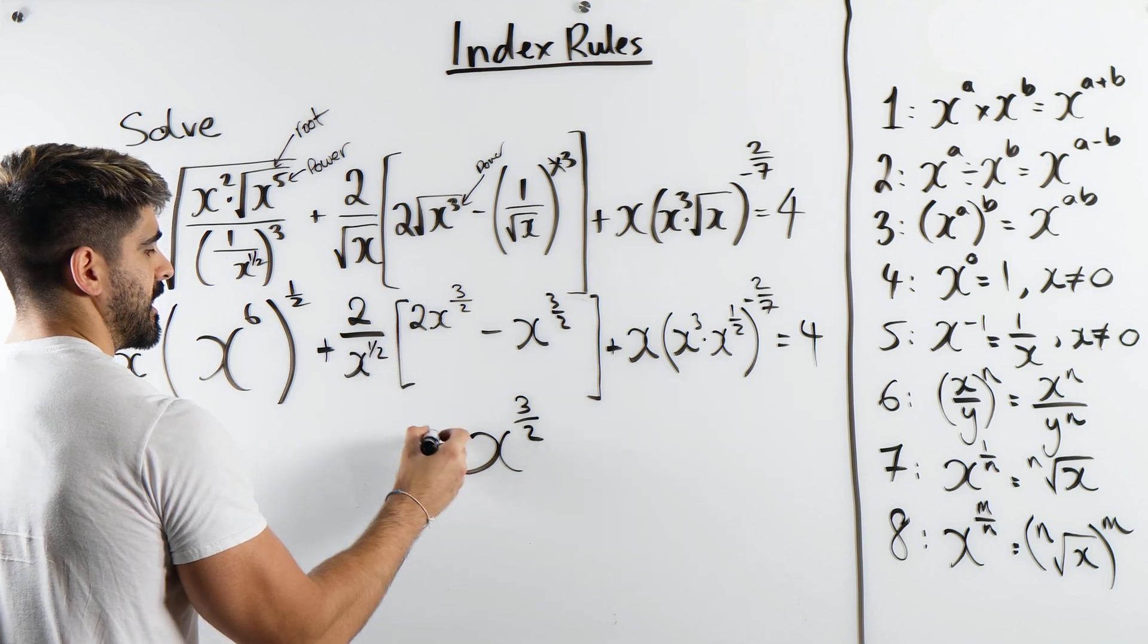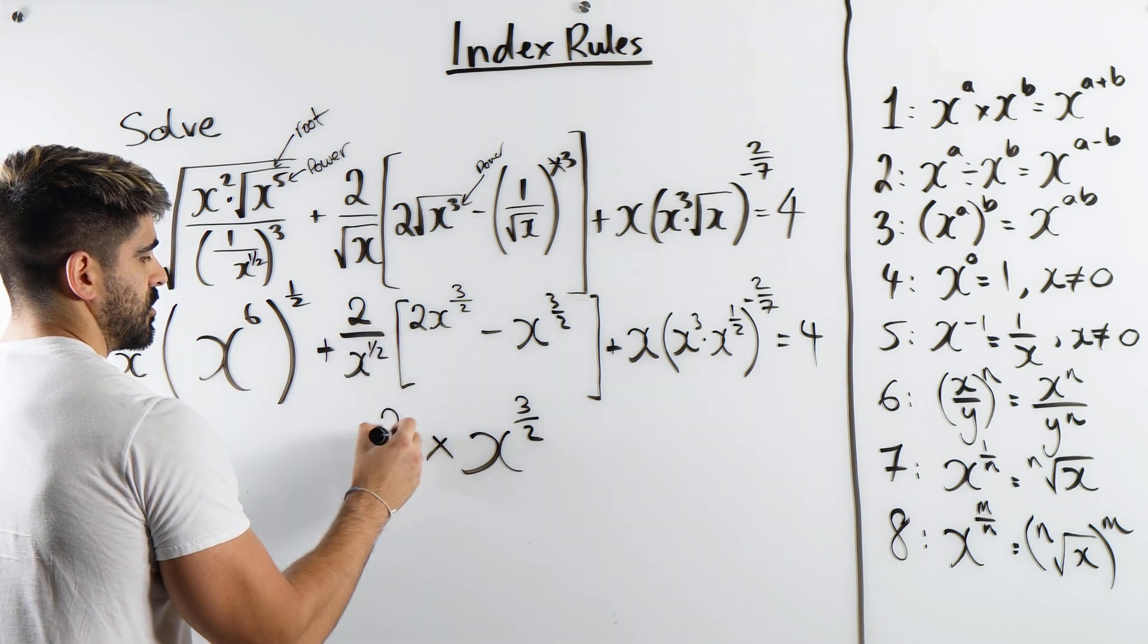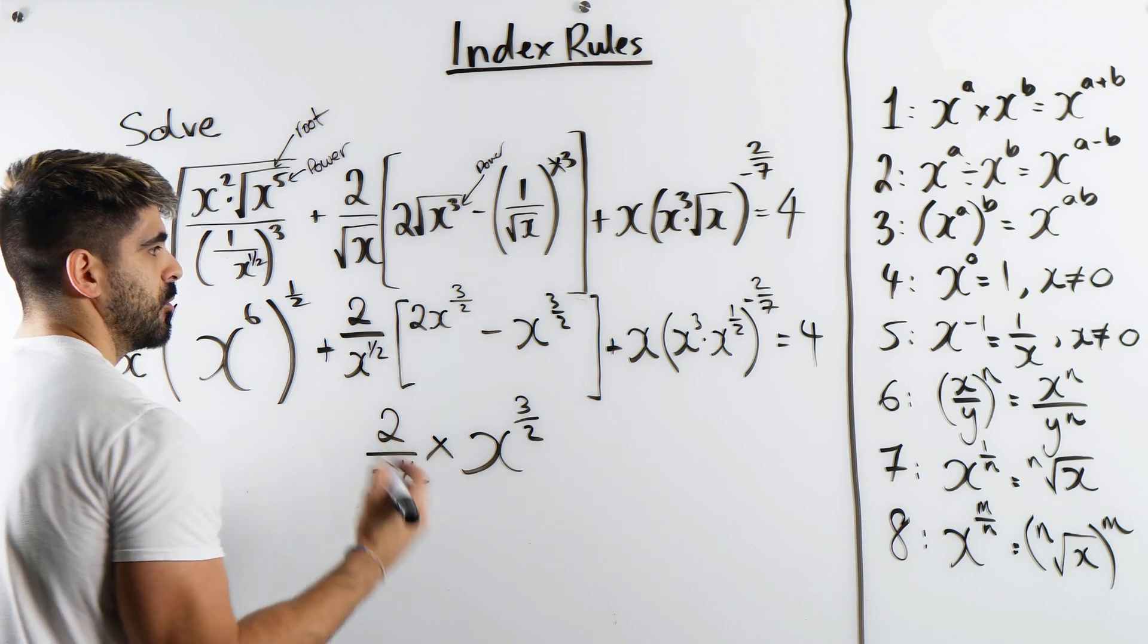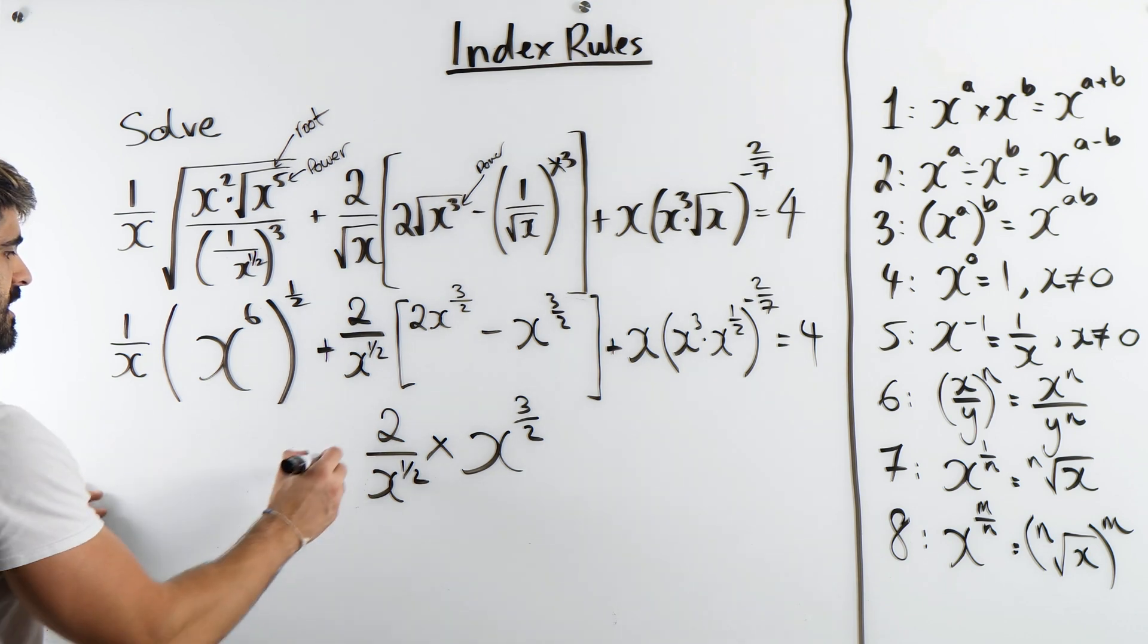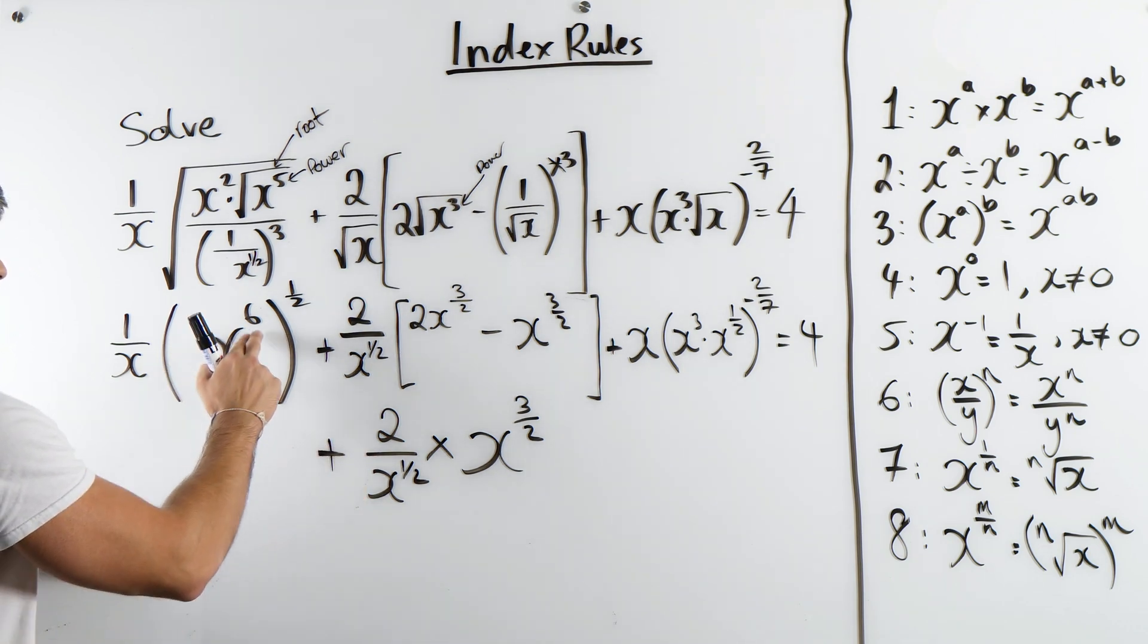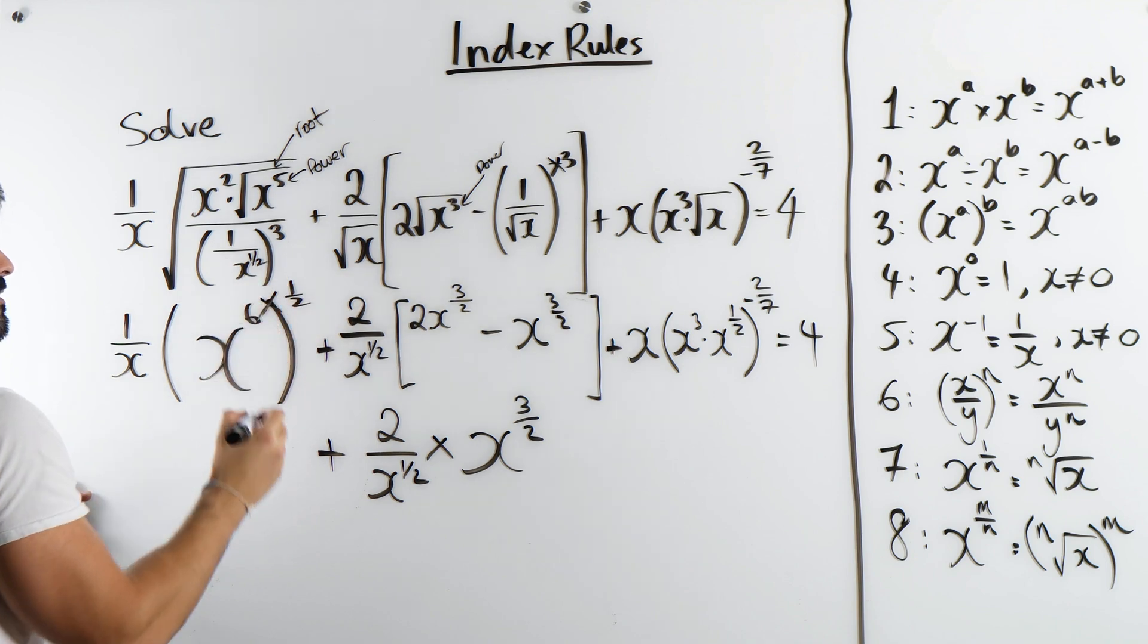And we are multiplying it by 2 over x to the power of a half. We'll deal with that in a second, which I guess actually, maybe I'll just write this here now. x to the power of 6 raised to another power. We're going to multiply these powers. That's just x cubed.